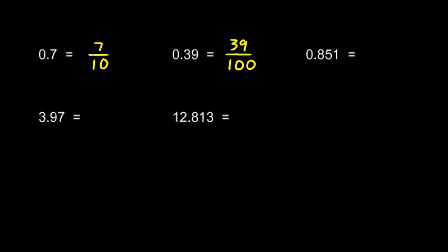And point eight five one is eight hundred and fifty one thousandths. I've gone out three places right here, so I need three zeros there in my denominator.